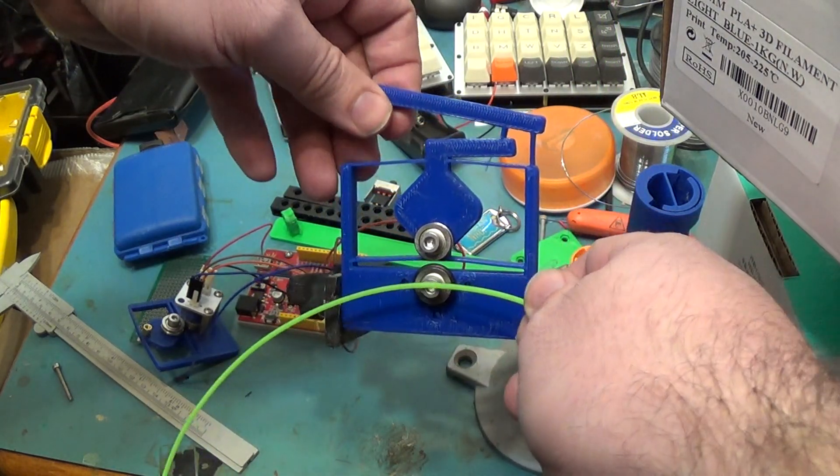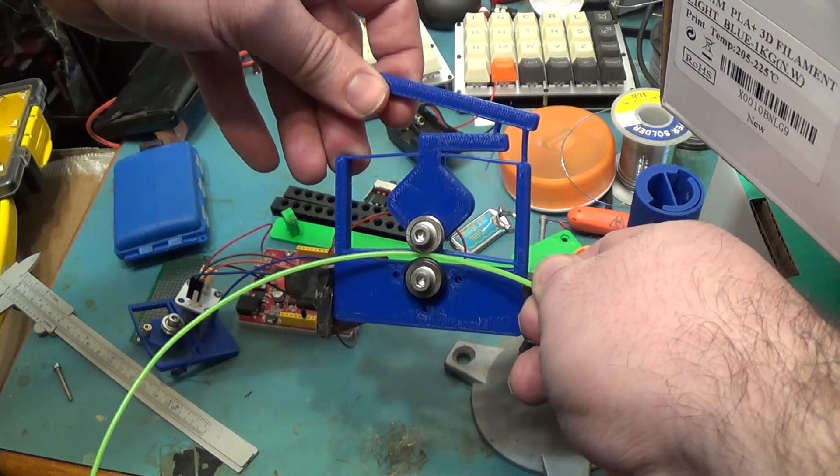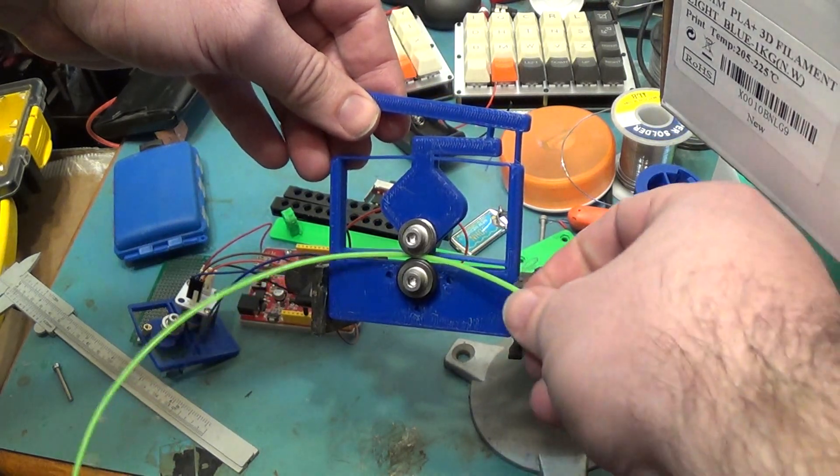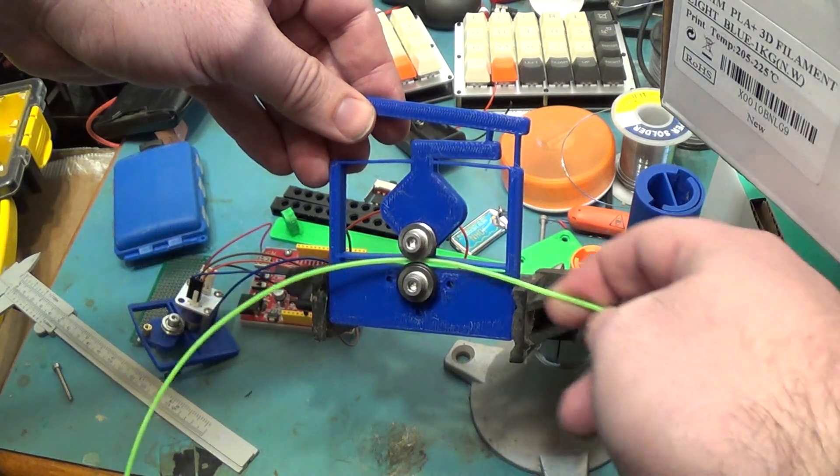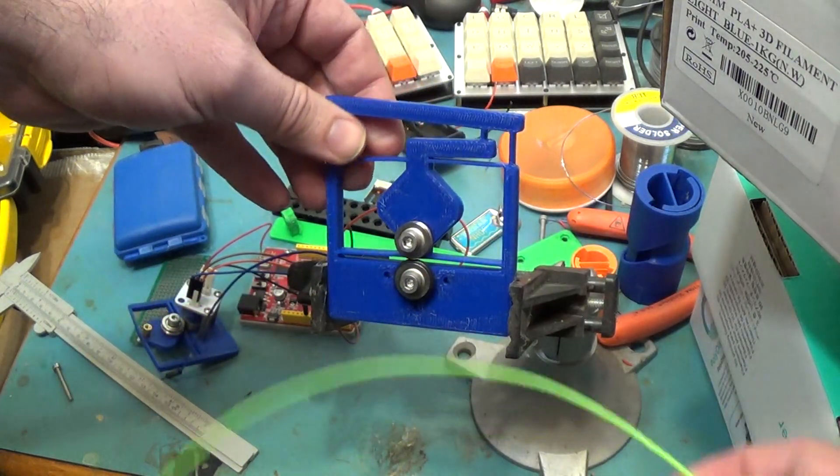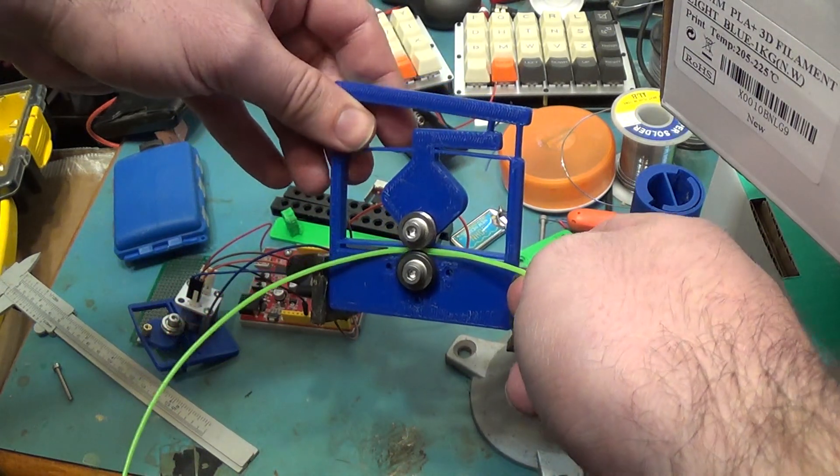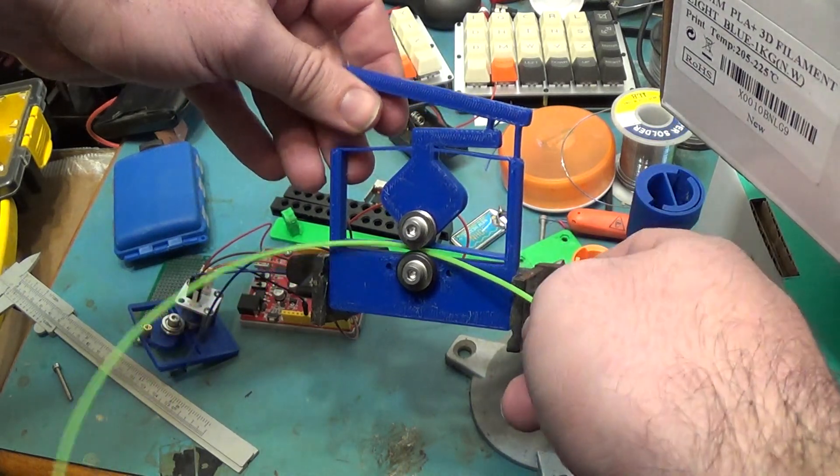That allows you to easily lift it and stick the filament in from the side, which will allow you to clip onto filament that's going into your machine without cutting it and stringing it through very easily.